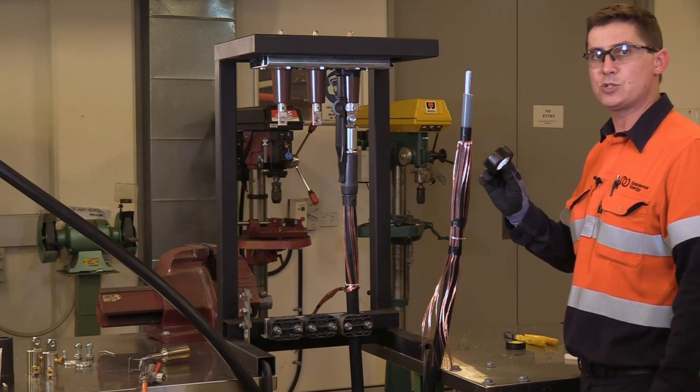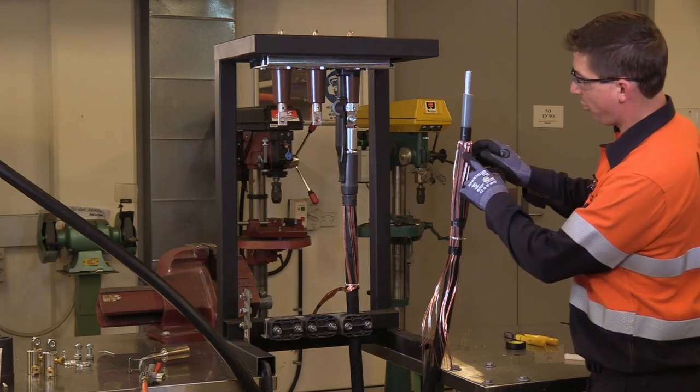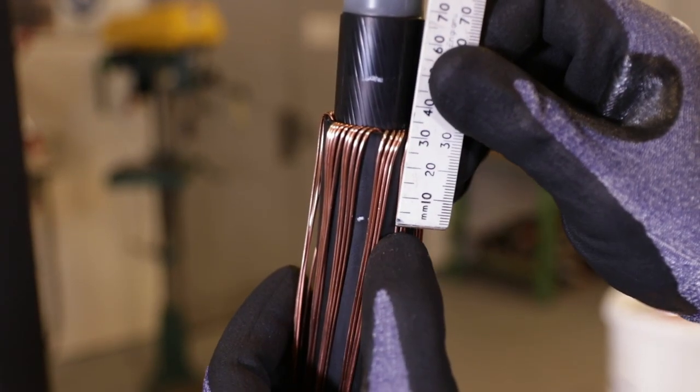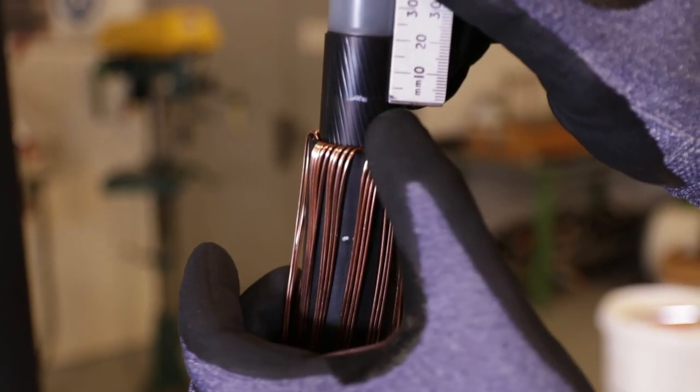After that, we're going to use J20 sealing tape. We're going to start 30mm onto the screen wires, and come 20mm from the end of the Semi-Con cut.